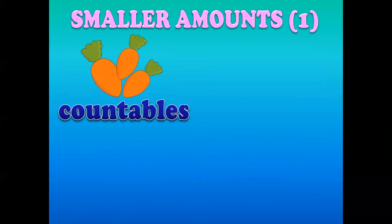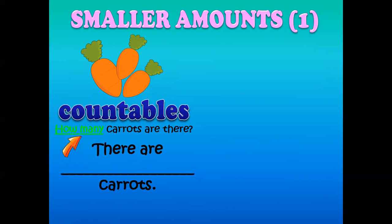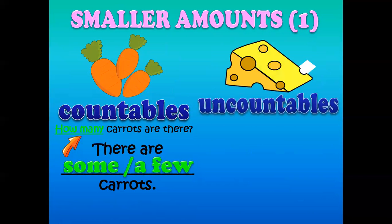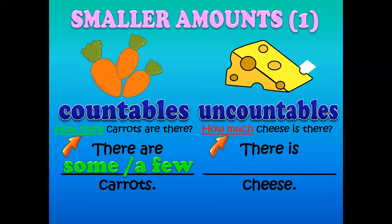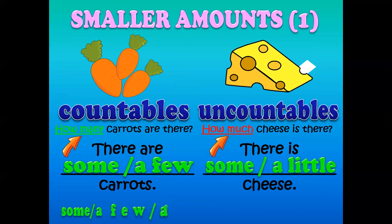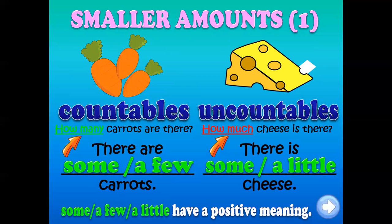Smaller amounts — countables. For example, carrots. Carrots are countable: one carrot, two carrots, three carrots. You can say: there are some, or a few carrots. Remember, 'a few' is used for countable nouns. For uncountable nouns, like cheese, you say: how much cheese is there? And the answer can be: there is a little cheese. Remember: some, a few, and a little have a positive meaning. A few is for countable nouns and a little is for uncountable nouns — they refer to small amounts.